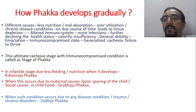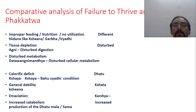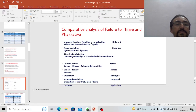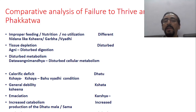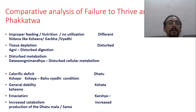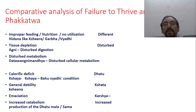Looking at this slide showing the comparative analysis of failure to thrive and fakkatwa or fakka, most things become very clear. Improper feeding, nutritional problems, no utilization of nutrients — these are the nidana like kshira, garbha, and vyadi. This is explained in terms of fakka roga, and almost all the same things are also explained in FTT.